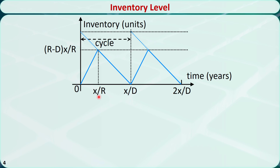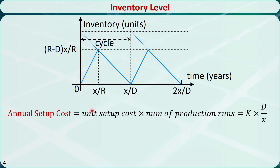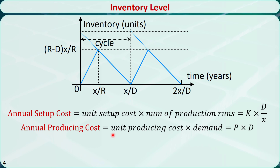The annual setup cost is equal to the unit setup cost times the number of production runs. The unit setup cost is K dollars per production run, and the number of production runs is D over x per year. The annual producing cost is equal to the unit producing cost P dollars per unit times the demand D units per year.